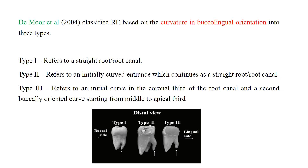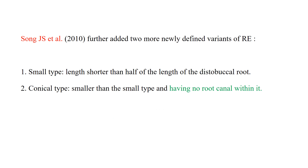De Moor et al. (2004) gave a classification based on curvature in the buccolingual orientation. Type 1: straight root or root canal. Type 2: initially curved entrance but continues as a straight root or canal. Type 3: an initial curve in the coronal third of the root canal with a second buccally-oriented curve starting from the middle to apical third. Song JS et al. added two new variants — 'small type' (radix length shorter than half the distobuccal root) and 'conical type' (smaller than small type, with no root canal within it).